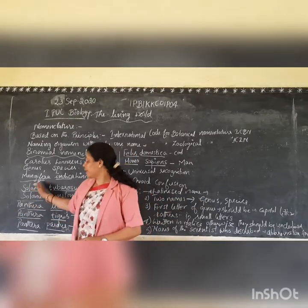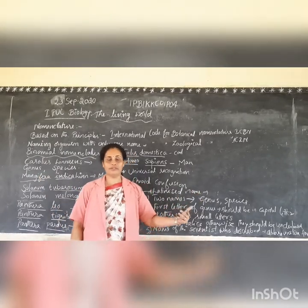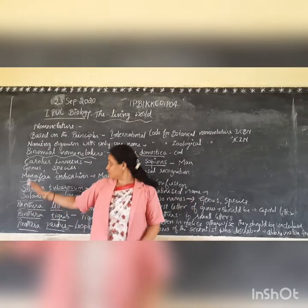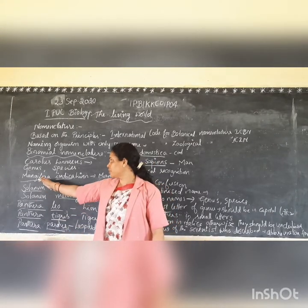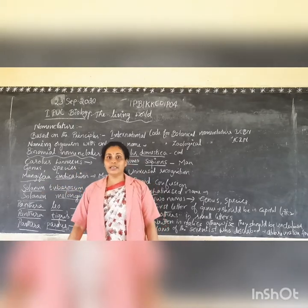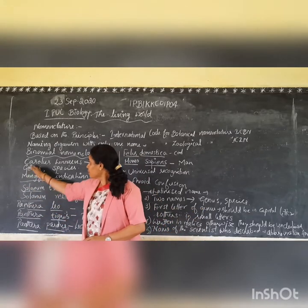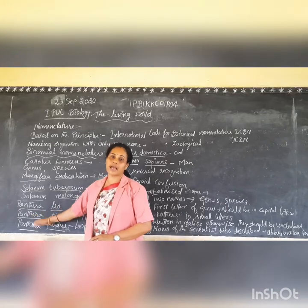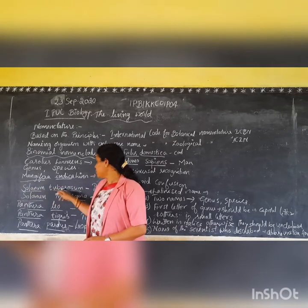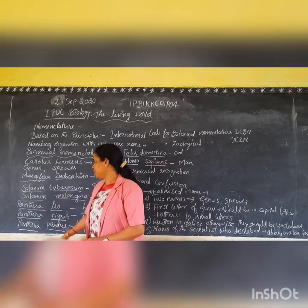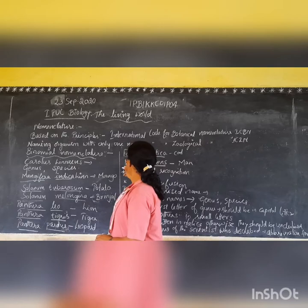When writing scientific names, there are two words: the first word is always the genus name and the second word is always the species name. The first letter of the genus name is always written in capital letter. For example: Mangifera — M is capital; Solanum — S is capital; Panthera — P is capital; Homo — H is capital; Felis — F is capital.